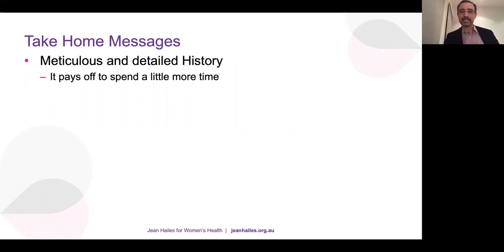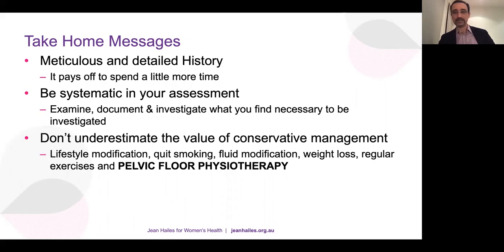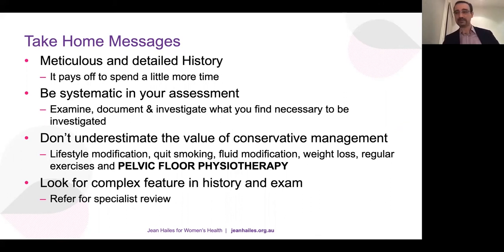Take-home messages: meticulous and detailed history pays off — history, history, history. Be systematic in your assessment. Examine, document, and investigate what you find necessary. Do not underestimate the value of conservative management — it does good to the patient, and even if it fails it builds foundations. Weight loss and not smoking are always good — not only for urinary incontinence. Look for complex features in history and examination and refer to a specialist. If you put these principles in front of you when you see a woman with urinary incontinence, you will never go wrong.